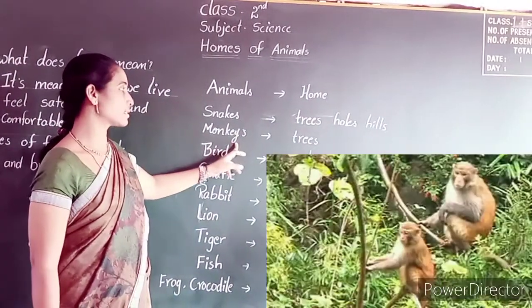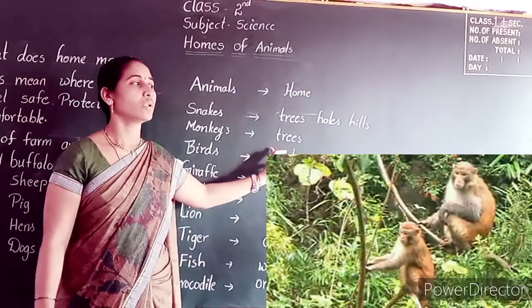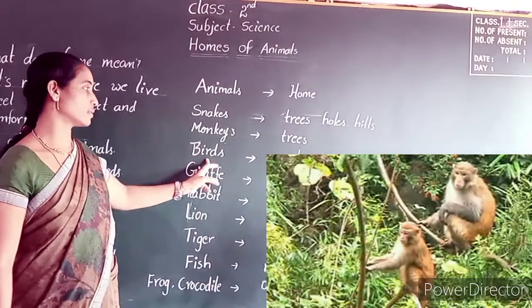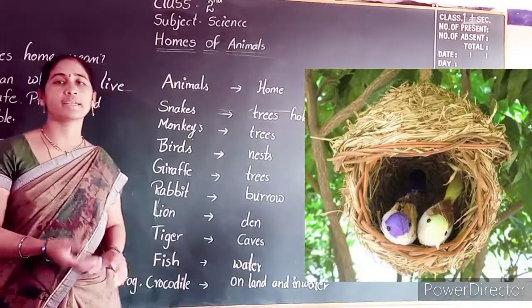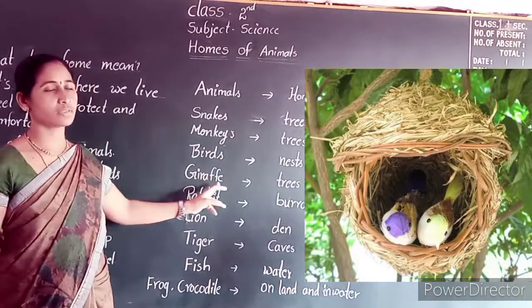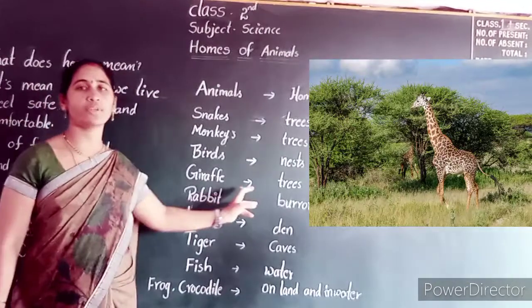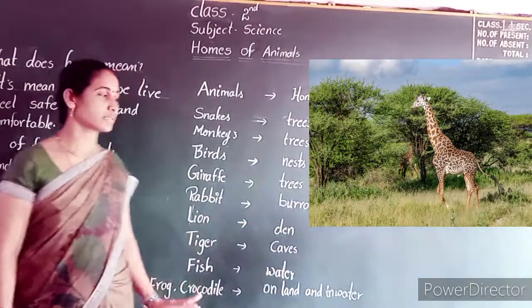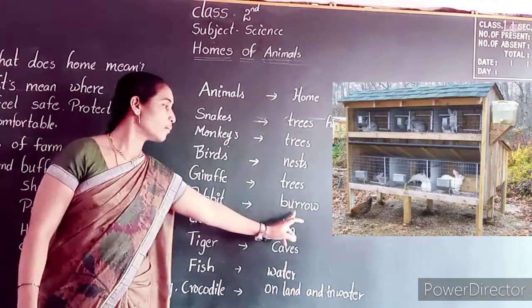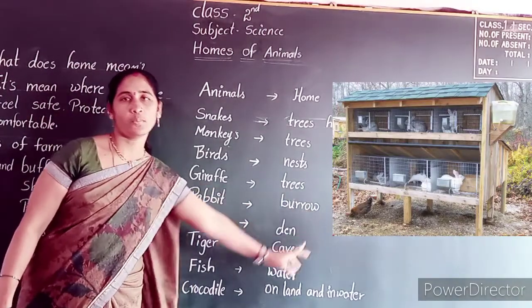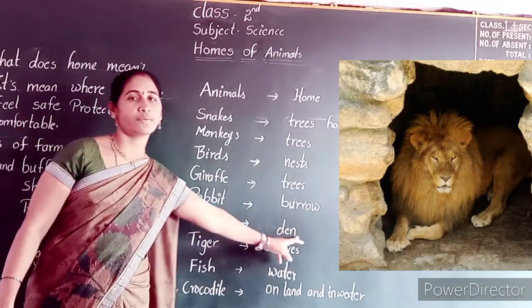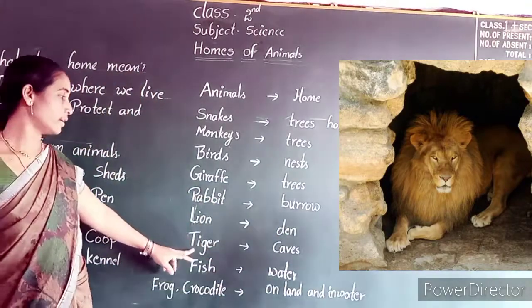Next — monkeys. Monkeys also live on trees. And birds — birds build their nest, they live in nests. Giraffe — giraffes live among the trees.